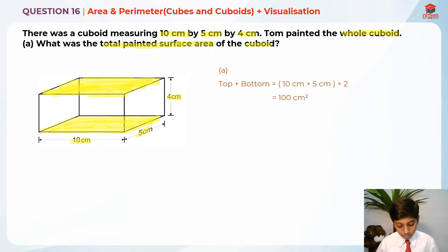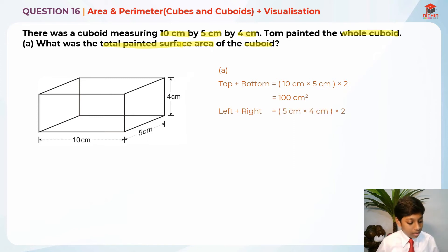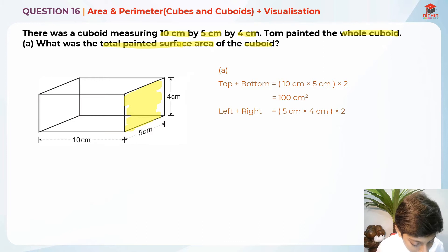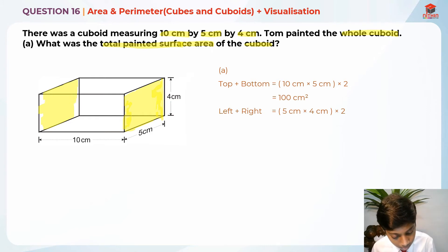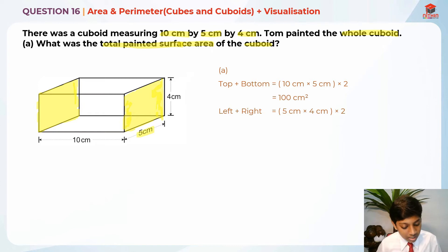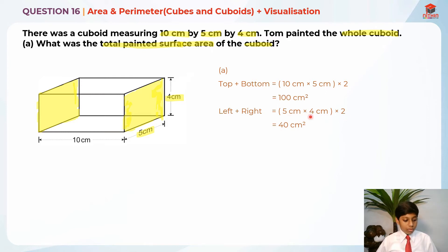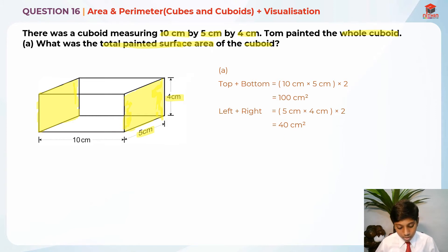After the top and bottom, we are going to find the left and the right. We take 5 cm times 4 cm times 2. Opposite sides are equal in area, so the left plus right is 5 cm × 4 cm × 2, which gives us 40 cm².